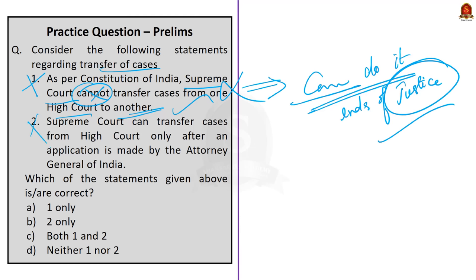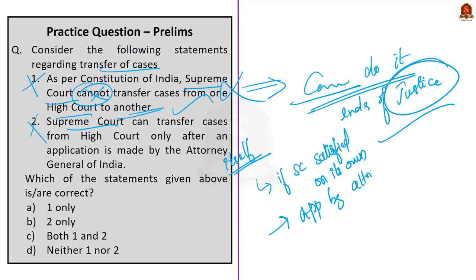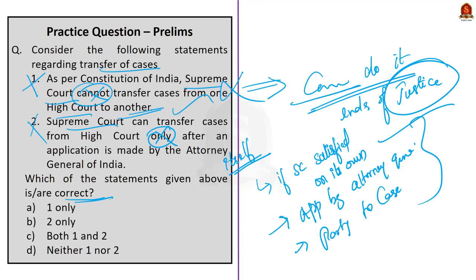If cases involving the same questions of law are pending before the Supreme Court and one or more High Courts, or before two or more High Courts, the Supreme Court may withdraw the case pending before the High Court and dispose of all the cases itself. After this, the Supreme Court may return the withdrawn case to the respective High Court, which shall proceed to dispose of the case in conformity with the Supreme Court's judgment. This is done in three circumstances: if the Supreme Court is satisfied on its own motion, based on an application made by the Attorney General of India, or by a party to the case. Since the question demands the correct statement and both are incorrect, the answer is neither one nor two.